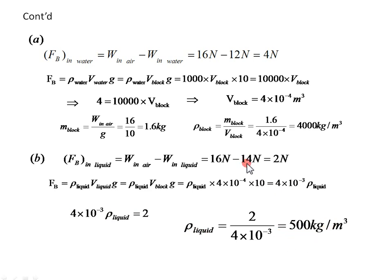The object weighed more in the liquid than in water, and the density of the liquid is found to be less than the density of water. The density of the liquid is 500, and density of water is 1000. This is a very important conclusion.